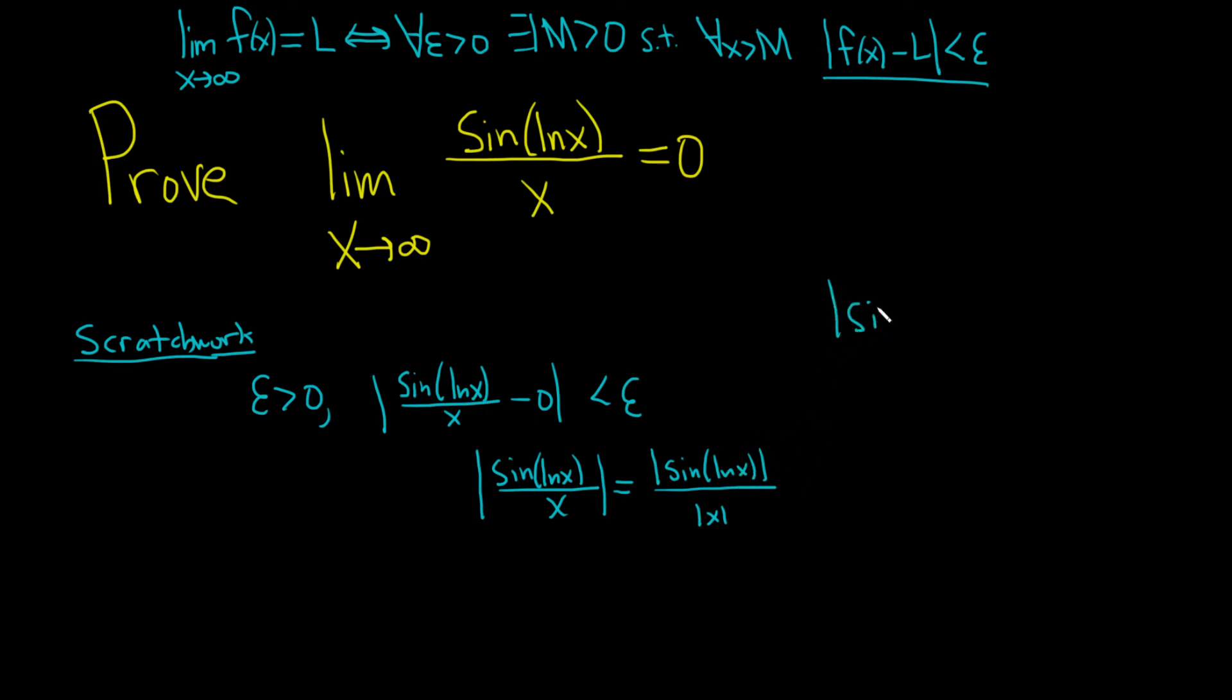In general, the sine of a real number u in absolute value is always less than or equal to one for all numbers u. So it doesn't matter that the ln is there. So this is less than or equal to one over the absolute value of x. What makes it even better is that x is approaching infinity, so you know it's positive. This is just one over x.